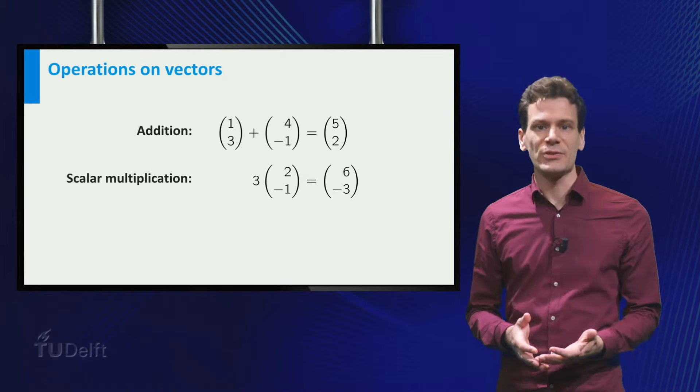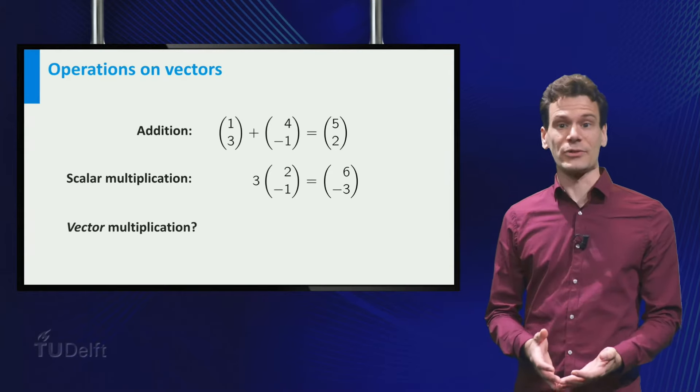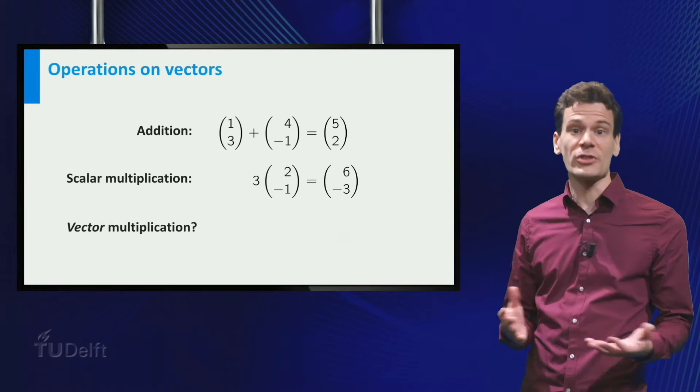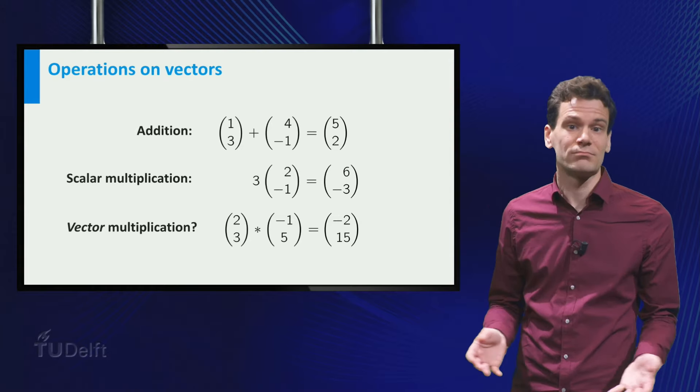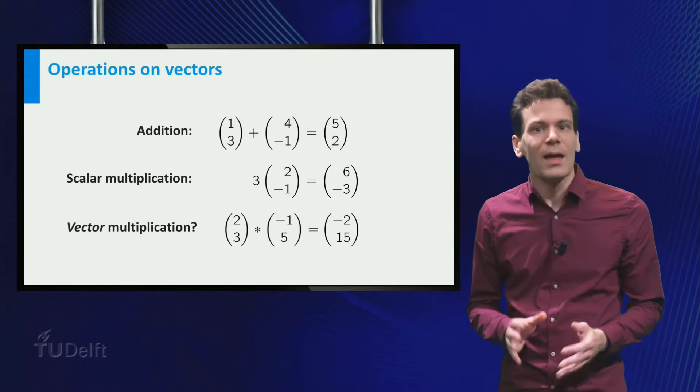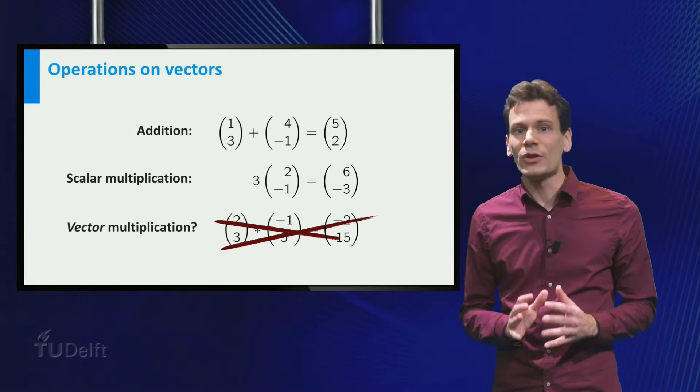A natural question is, can we also multiply two vectors? One idea would be just to multiply them component-wise. Not a strange idea, right? But as it turns out, we do not use this operation.